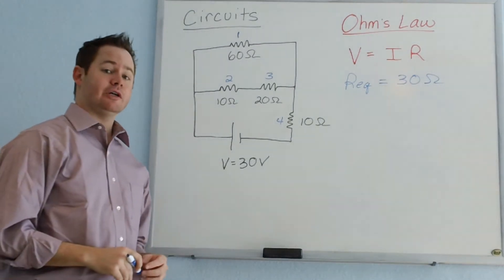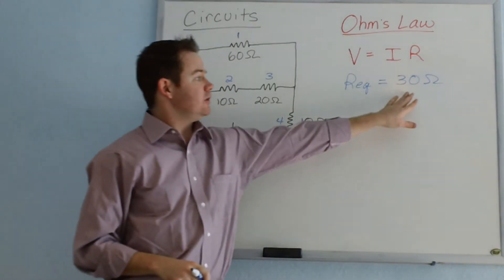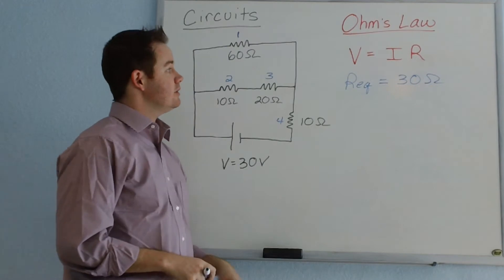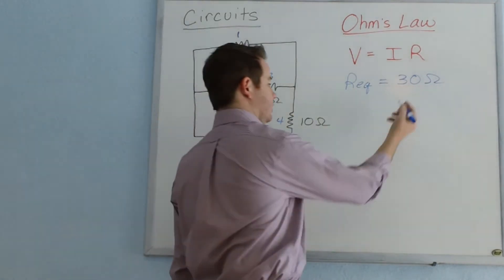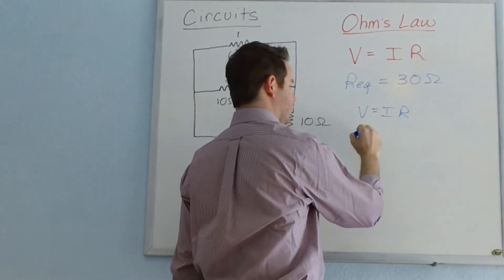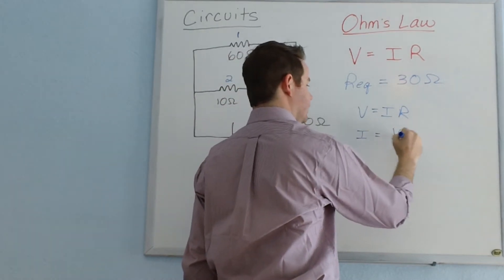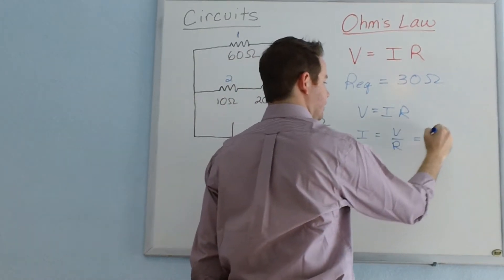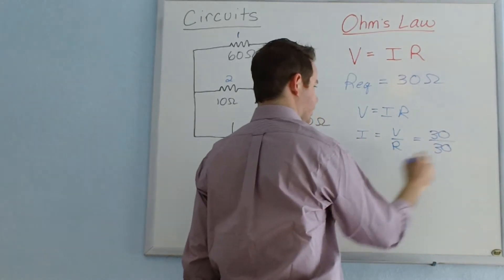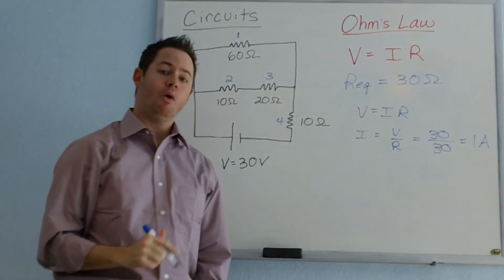In order to find the current through this circuit, we're going to simply plug that value in along with the value of V that we have given to us in our original circuit into Ohm's law. So V equals IR. To solve for current, your current when you divide both sides by R will equal V over R, and we plug in those values of 30 for each. So our current for this circuit will equal 1 amp.